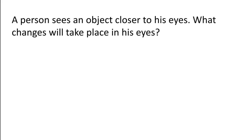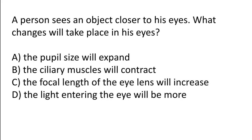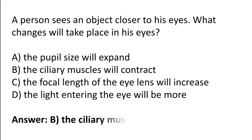A person sees an object closer to his eyes — what changes will take place in his eyes? The pupil size will expand, the ciliary muscle will contract, the focal length of the lens will increase, or the light entering the eye will be more. The correct answer is option B — the ciliary muscles will contract.